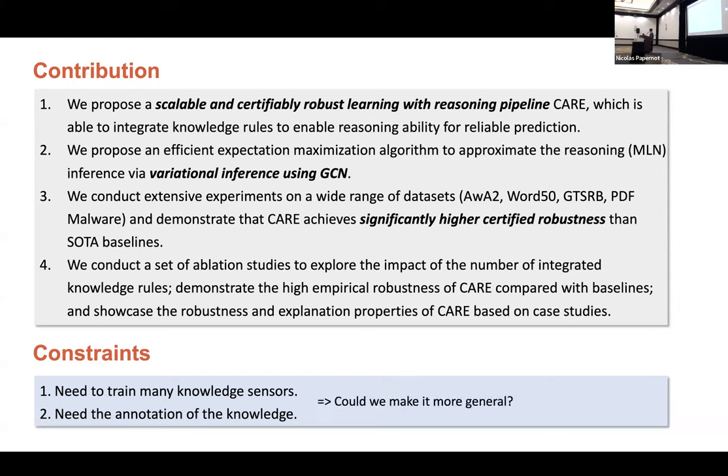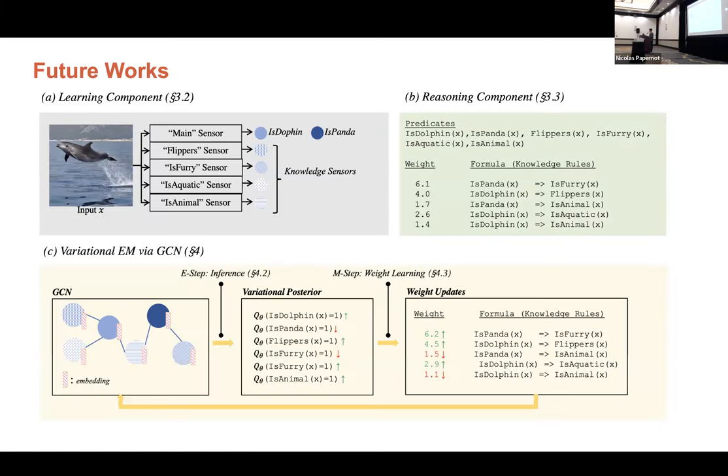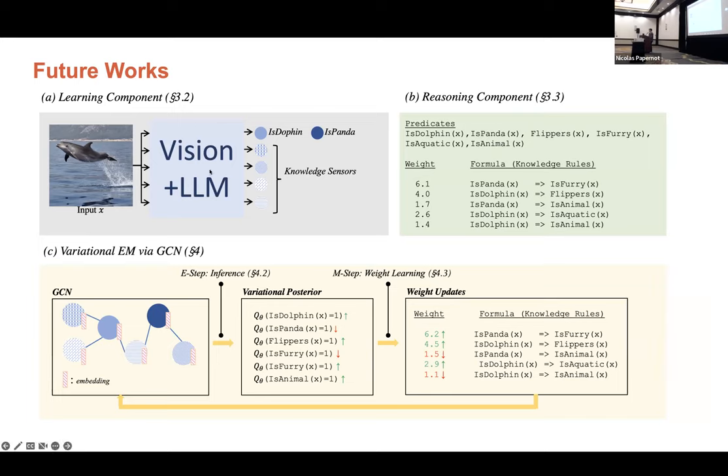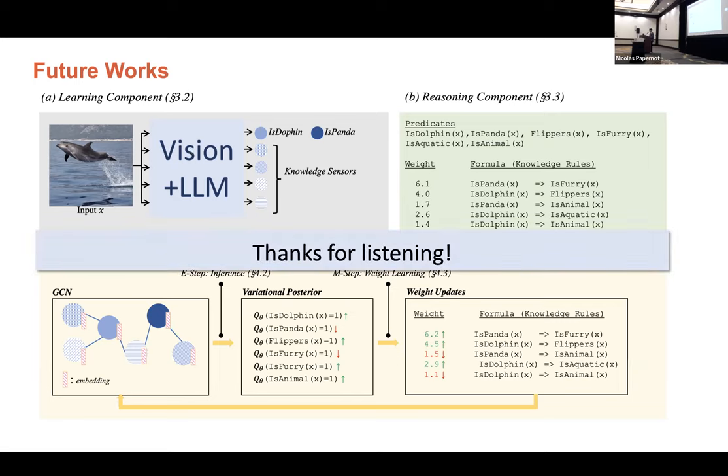So as for the future work, one question is how could we make this more general? The main bottleneck is happening on the learning part. We need to train a lot of sensors and we need the annotation. But an interesting way to think is that could we replace this section with vision and LLM. If we can, we do not need any annotation and we do not need to train any sensors. We just ask different questions to the LLM and get the corresponding answers and still do the reasoning component. As I show here in this way, our method will be more general. And this is what I am doing now. Thanks for listening.